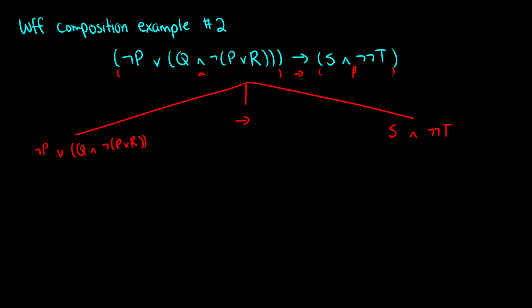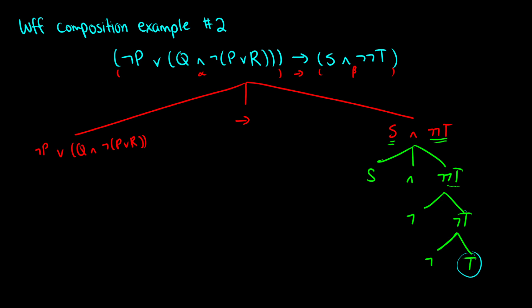Let's do the right side first. In (S and not-not-T): S is one well-formed formula, not-not-T is another, connected by AND. With not-not-T, there's a negation attached to the well-formed formula not-T. So we break it into a negation and not-T. Then not-T breaks into a negation and T. Going in reverse: start with T, attach a negation to get not-T, attach another negation to get not-not-T, then conjoin with S to get (S and not-not-T).